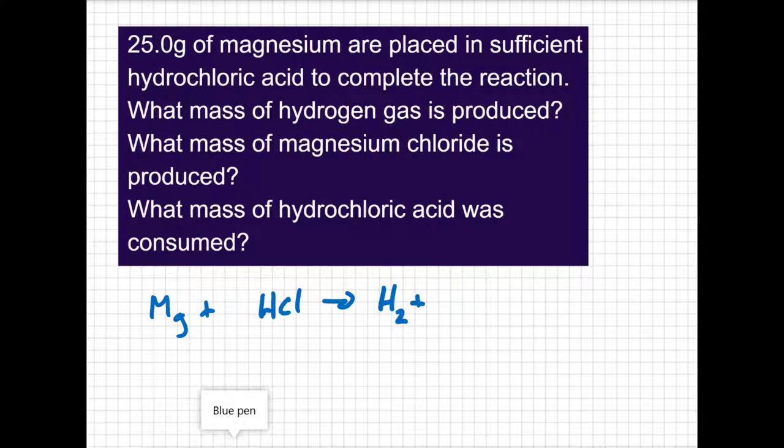Magnesium as a compound forms a plus two charge. Chlorine forms a minus one charge, so magnesium chloride is MgCl2. To balance that, I'm going to need two hydrogens and two chlorines on the reactant side. If I put a two there, now we're balanced.